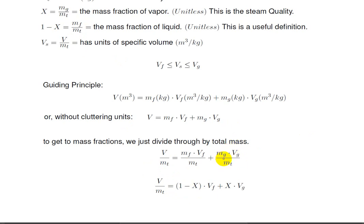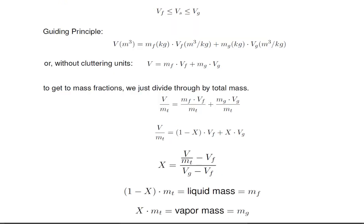And we can see that Mg over Mt is x. And so we convert x in place of Mg over Mt. Now we can solve the equation for x. And if we're asked for the actual mass fractions, Mf and Mg, we can just use their definitions to find them.